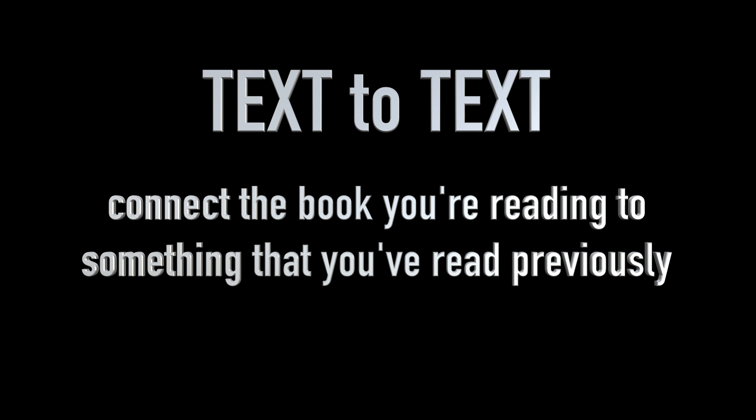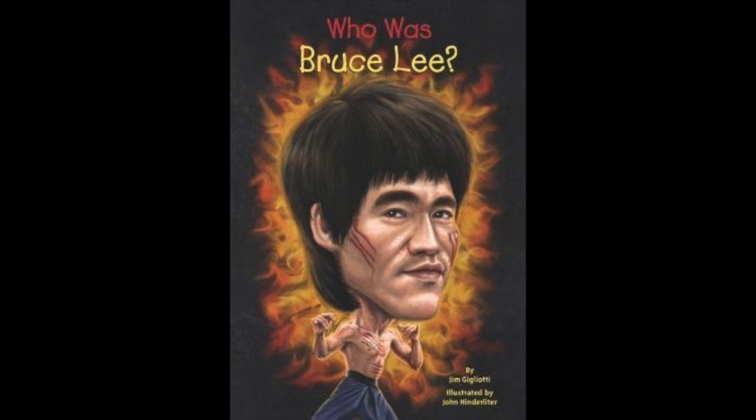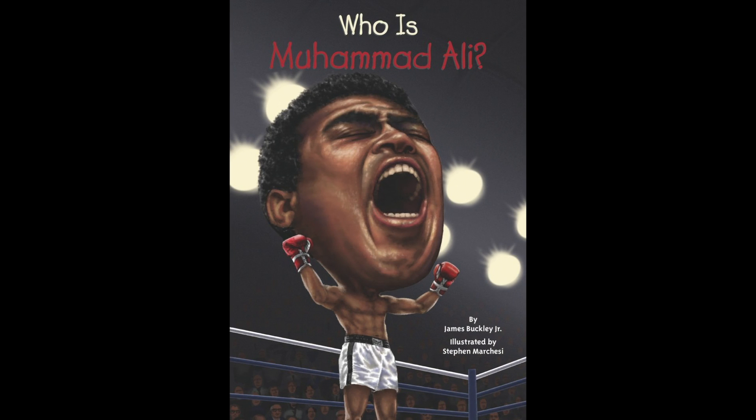A text-to-text connection is when you can connect the book you're reading to something that you've read previously. In this book about martial artist and action star Bruce Lee, it says that he held great respect for the heavyweight boxing champion, Muhammad Ali. It just so happens that I've already read this book about Muhammad Ali, so I was able to connect them together.